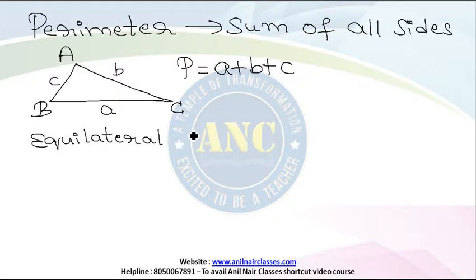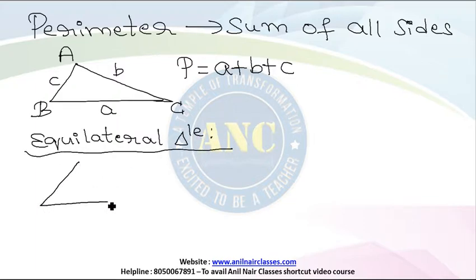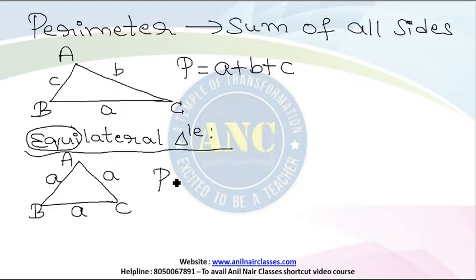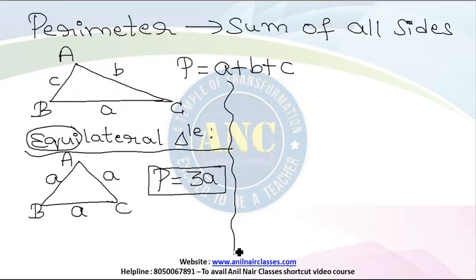A scalene triangle is the general triangle with all three sides unequal. If we make all three sides the same, it becomes an equilateral triangle. For an equilateral triangle ABC, the name 'equi' means equal — all three angles and all three sides are equal. If one side is a, all three sides are a, so the perimeter is a plus a plus a, which is 3a — three times the side.